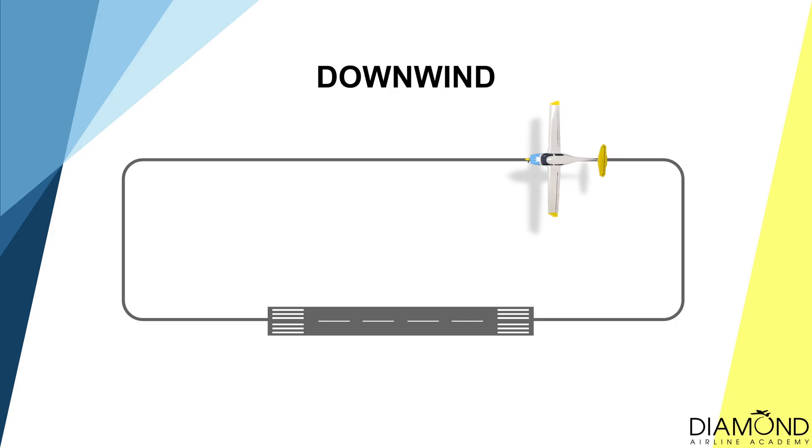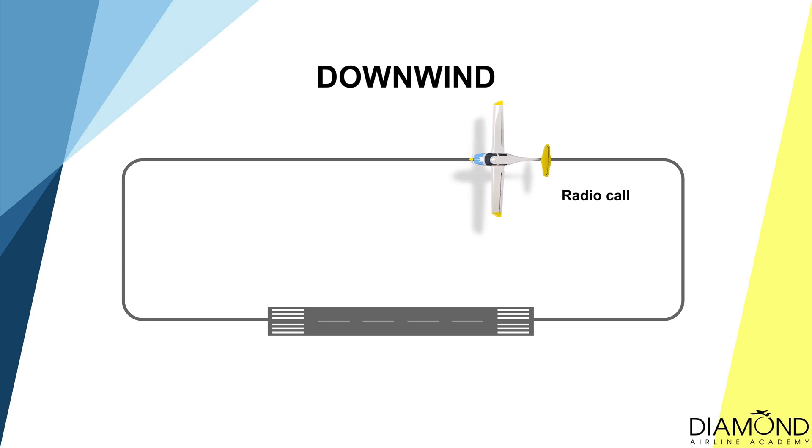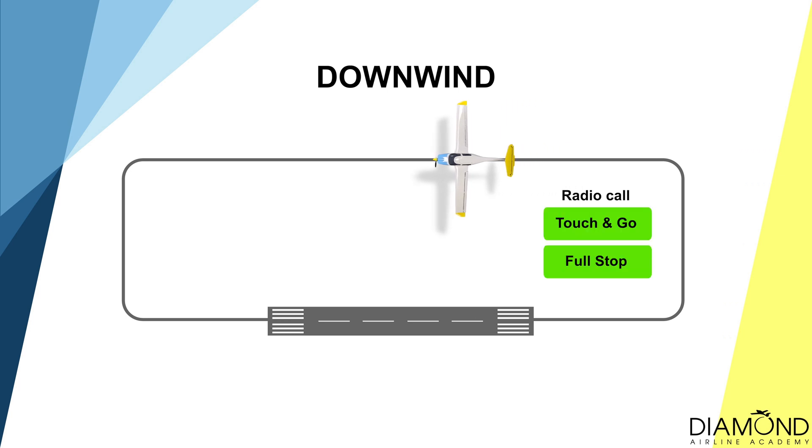The first step of a radio failure procedure is to recognise and acknowledge that the radio has failed. But how can we tell the radio is not working properly? When turning on the downwind, a radio call will be made during the turn to inform the tower of our intentions, whether it is a touch and go or a full stop. After the radio call, if the tower doesn't get back to us after a considerable amount of time, it could indicate our radio system is faulty.